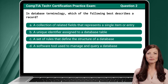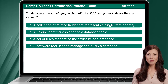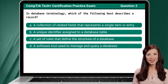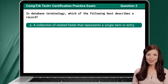Question 2. In database terminology, which of the following best describes a record? The answer is A: a collection of related fields that represents a single item or entry.